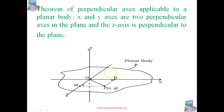The theorem of perpendicular axis is applicable to a planar body. To understand the theorem, consider this figure: x and y are the two perpendicular axes in the plane, and z is the axis perpendicular to this plane. This is an example of a planar body. An axis perpendicular to the body through point O is taken as the z axis, and two mutually perpendicular axes lying in the plane of the body are concurrent with the z axis, passing through O.